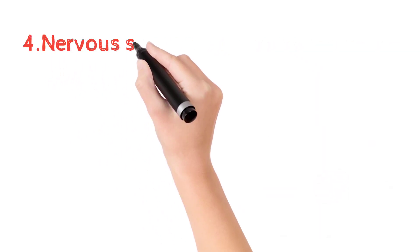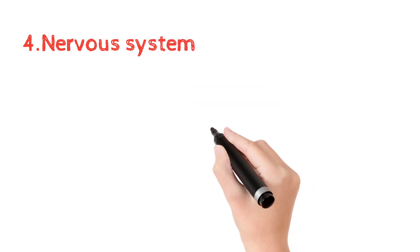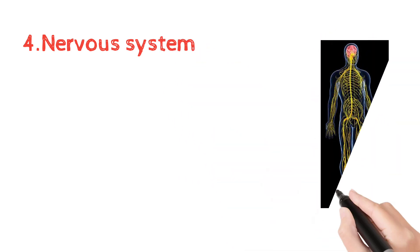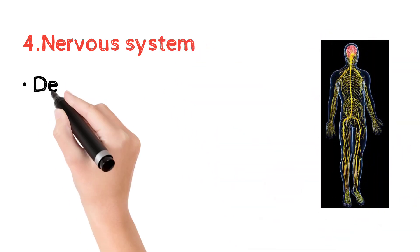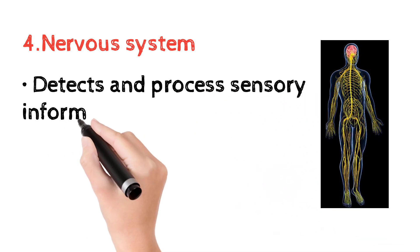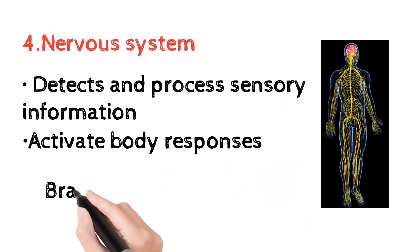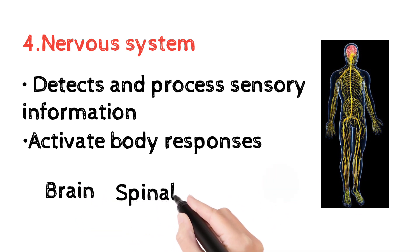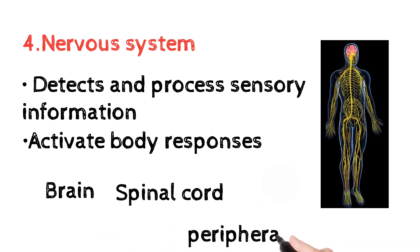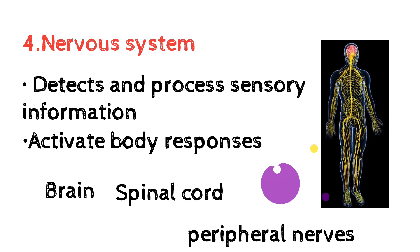The nervous system detects and processes sensory information and activates body responses. It handles senses and sensory receptors — like pain or heat — transmitting signals from the brain through the spinal cord and peripheral nerves.